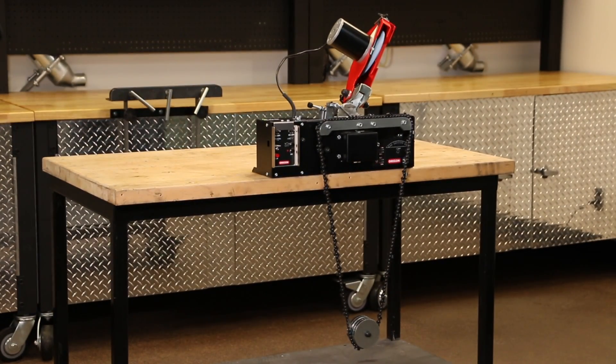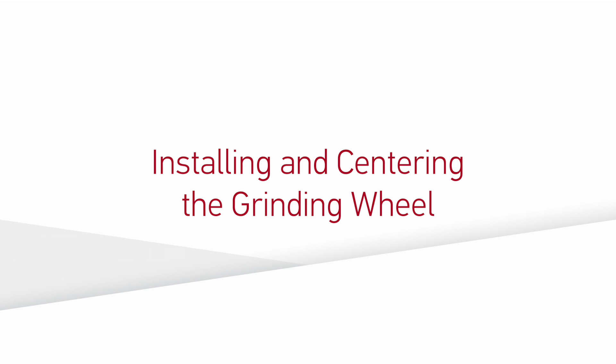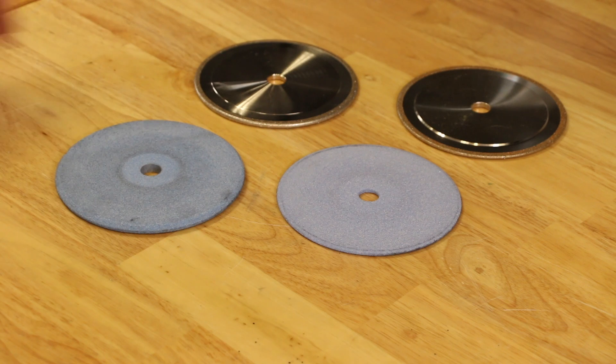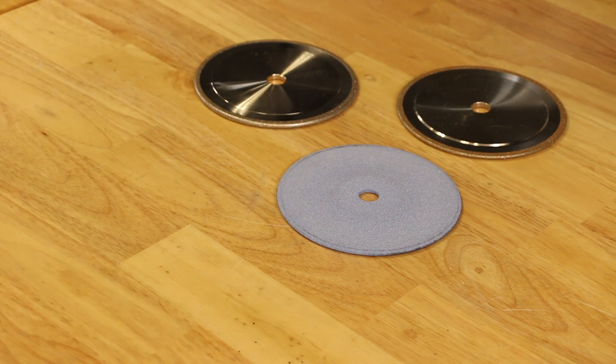The first step in preparing the grinder for use is installing and centering the appropriate grinding wheel. Your grinder comes with various wheels for use on different chain types. These vitrified wheels measure 5 and 3 quarter inch in diameter with a 5 eighth inch arbor size. It is critical to select the wheel of the appropriate thickness for each chain.